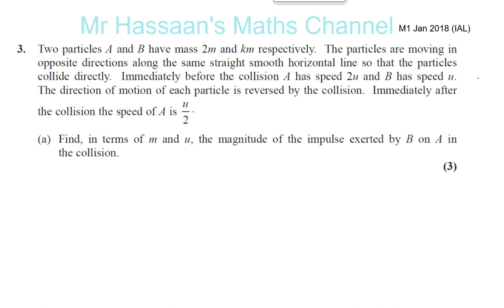The particles are moving in opposite directions along the same smooth horizontal line so that the particles collide directly. Immediately before the collision, A has a speed 2u and B has a speed u. The direction of motion of each particle is reversed by the collision. Immediately after the collision, the speed of A is u over 2.